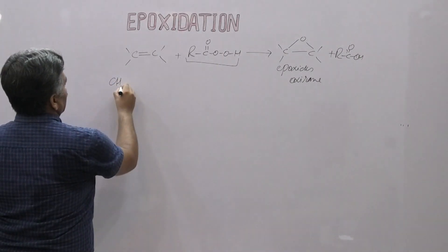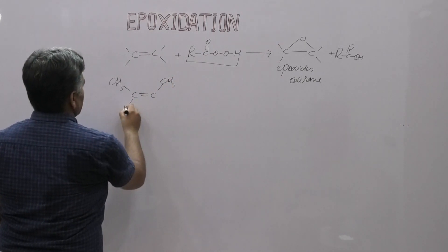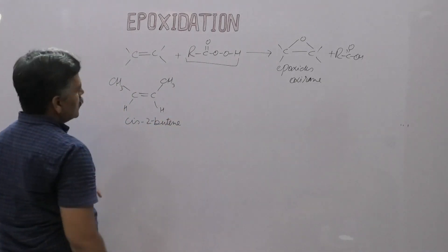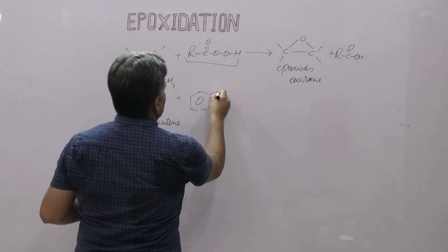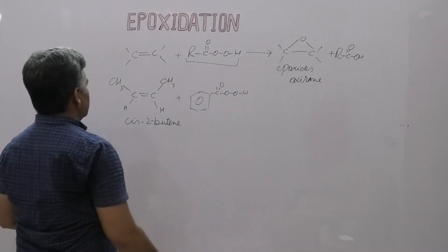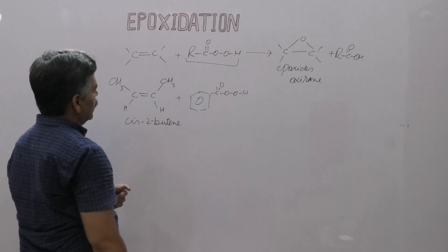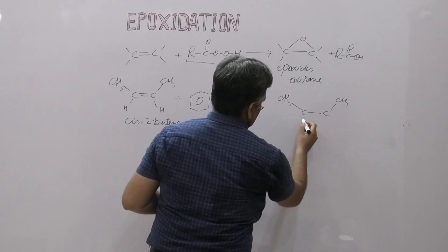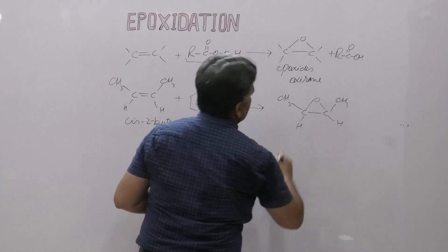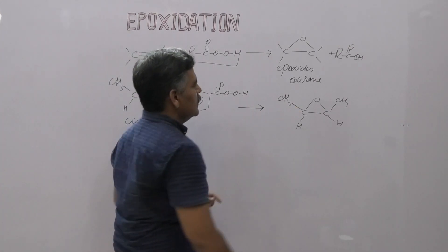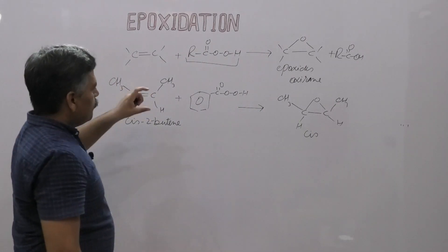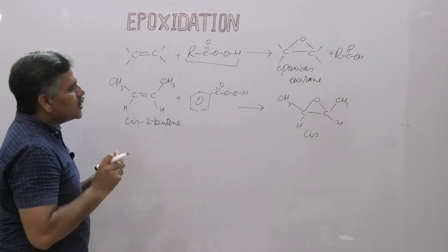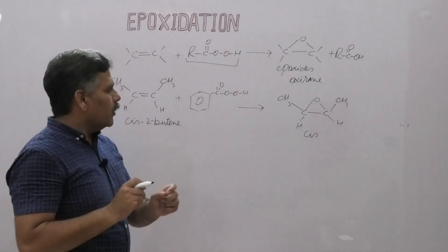Suppose we have cis-2-butene: CH3-CH=CH-CH3 with both methyl groups on the same side. When cis-2-butene reacts with peroxybenzoic acid or any peroxy acid or meta-chloro peroxybenzoic acid, the epoxide formed is cis. This means during epoxidation, cis alkene is converted into cis epoxide and trans alkene is converted into trans epoxide. This is because of the simultaneous cleavage and formation of old and new bonds respectively.